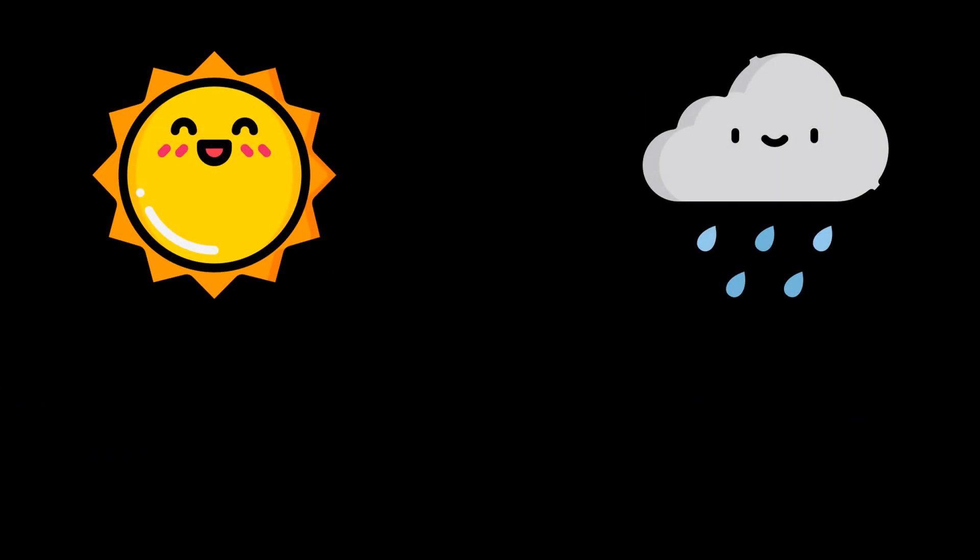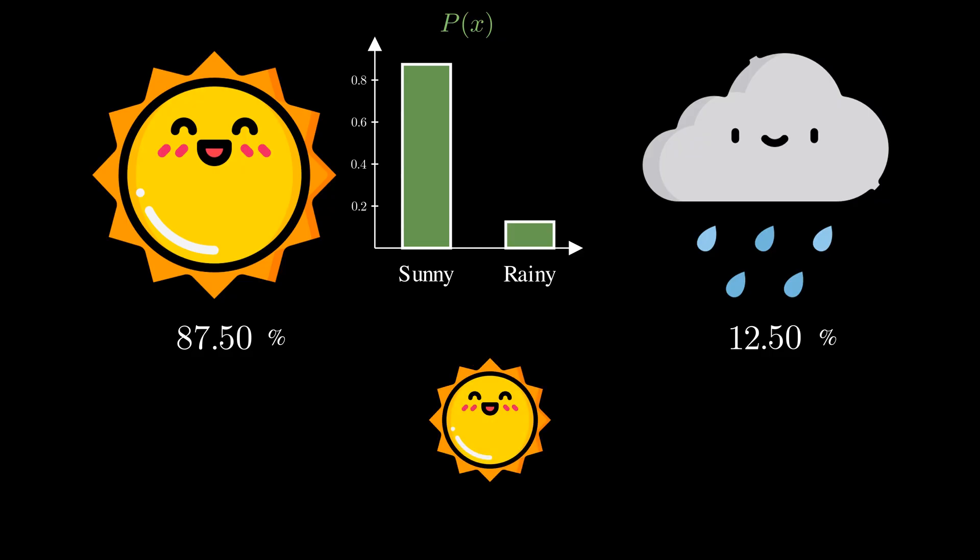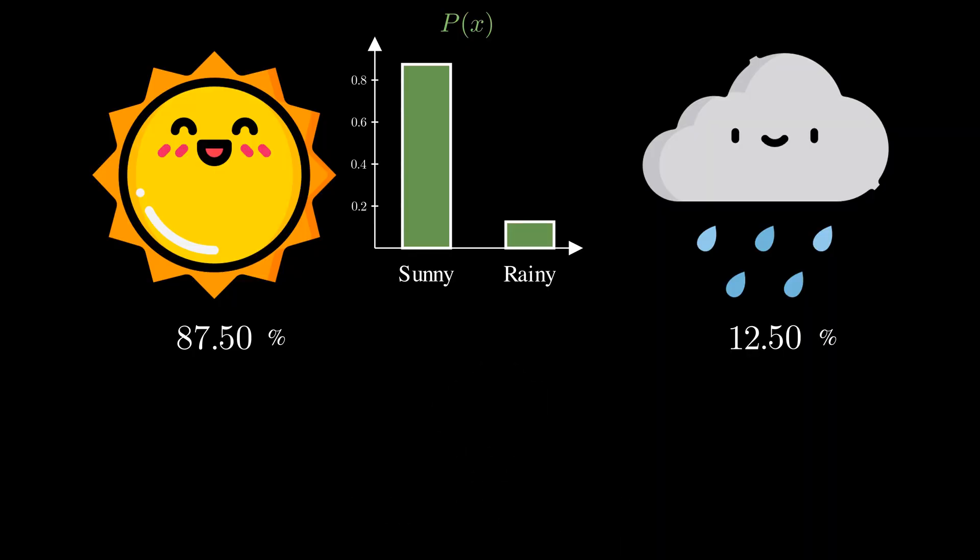When we check tomorrow's weather, we might see a 50% chance of a sunny or rainy day. This is the probability distribution P that reflects our confidence in different outcomes. Now suppose it says the probability of a sunny day is close to 90%. If it turns out sunny, well, that's expected. But if it rains, you probably find it surprising, right? That's the idea.